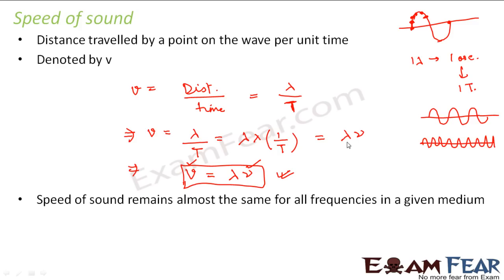Increasing frequency means the waves are coming closer together. So if frequency changes, your wavelength also changes. If frequency decreases, wavelength increases. So for all frequencies, whether increasing or decreasing, the wavelength adjusts itself so that the speed remains the same.